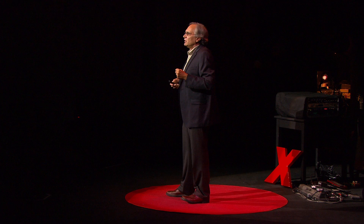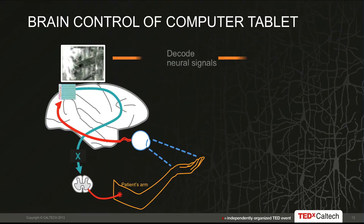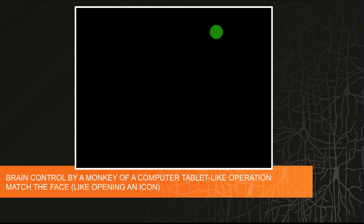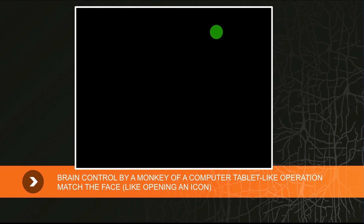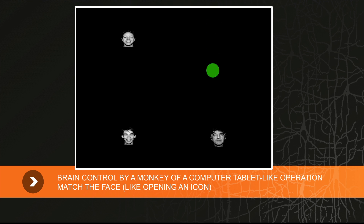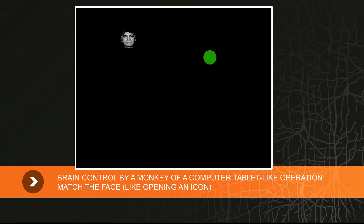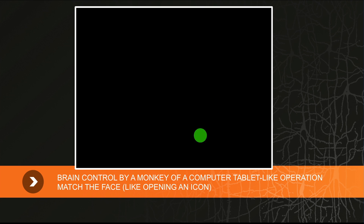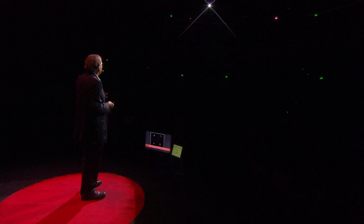Another application we're currently working on is using these decoded signals to operate a computer tablet. A monkey with implants in the brain uses brain control of a cursor to match a face in a crowd — a sample comes up and he moves the cursor to that face, then three faces come up and he has to find the matching face. We think this is a lot like opening an icon, say looking for your iTunes icon on your smartphone.